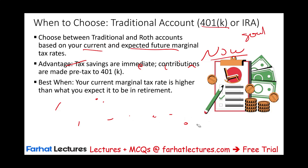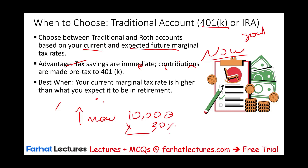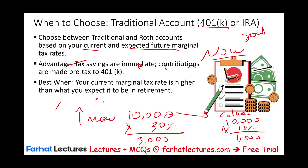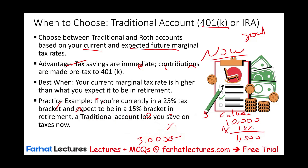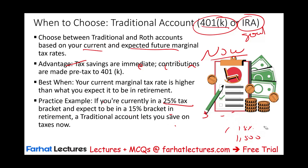You would definitely contribute to a 401k or traditional IRA when your tax rate is high now. Using the $10,000 example: at a 30% rate you save $3,000 now. If at retirement your tax rate drops to 15% on that same $10,000, you save an additional $1,500. So if you're currently at a 25% tax rate and expect to be at 15% during retirement, you should go with the 401k or IRA.